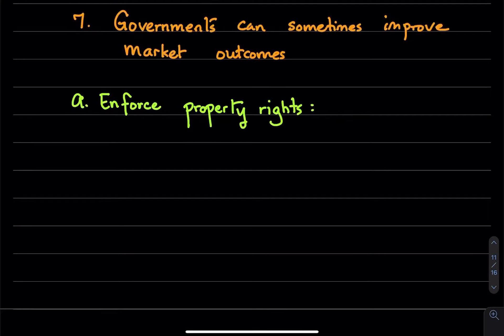In this video we're going to be talking about the last principle under the category of how people interact. This principle is about governments and the role governments play to improve market outcomes. So the idea here is that governments can sometimes improve market outcomes.